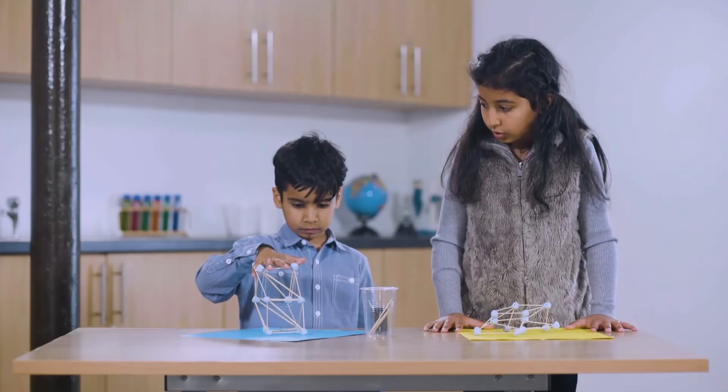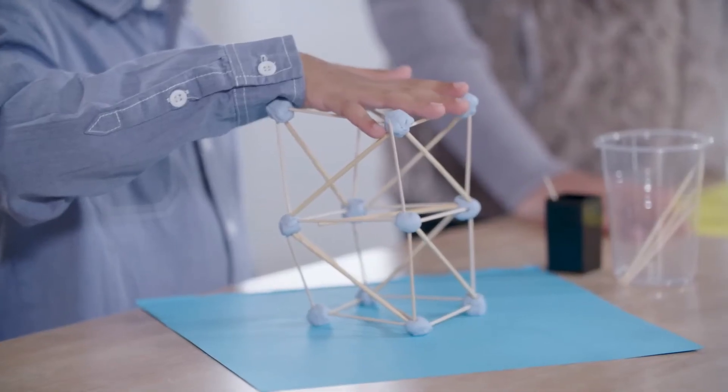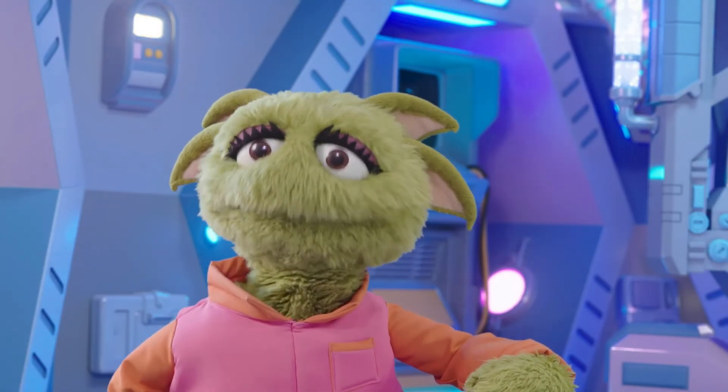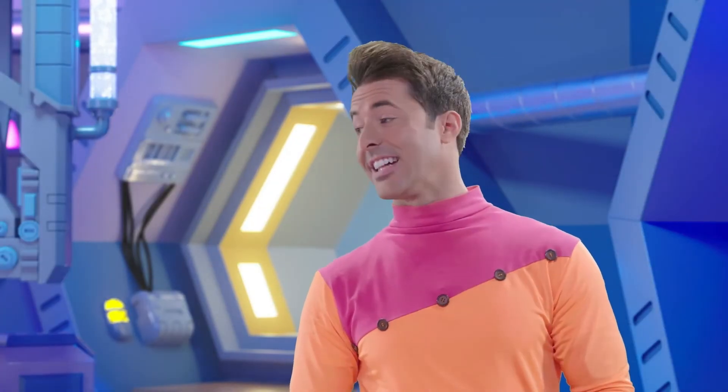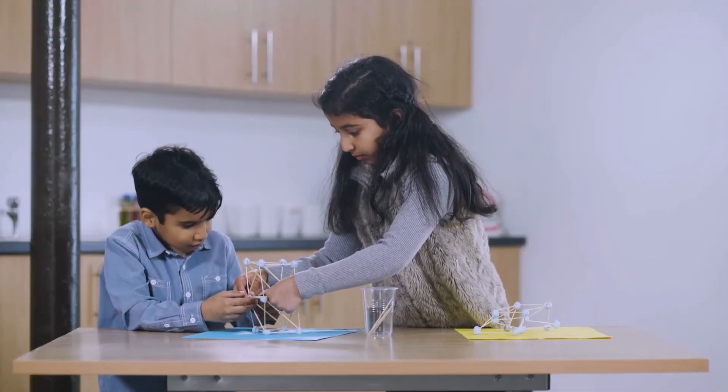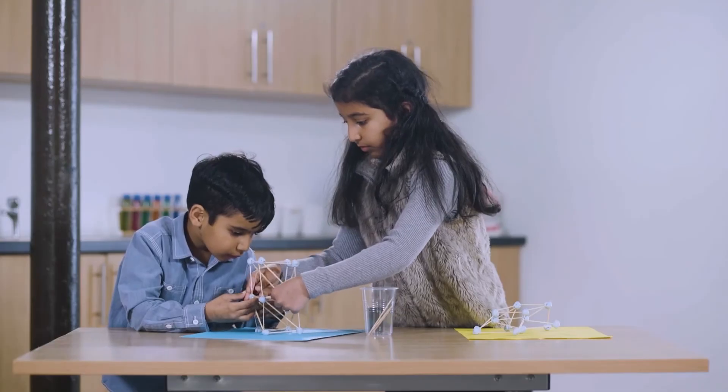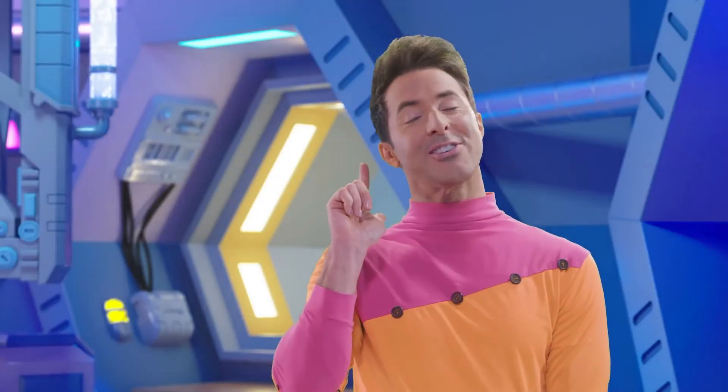Yes, even though Hattie is pushing down hard, the triangle tower is still standing. So what does that tell you, Zoom? If you want to build a tall tower, triangles are better than squares. Correct.